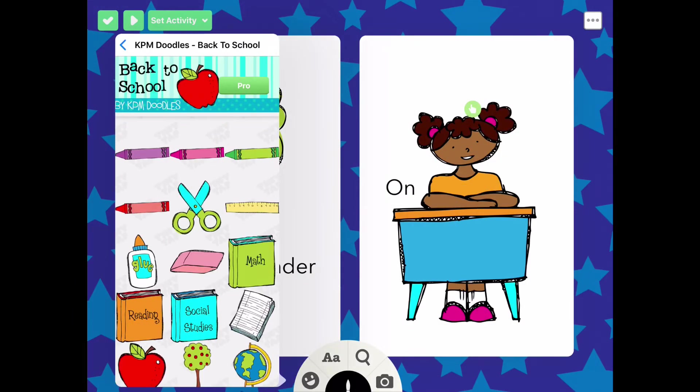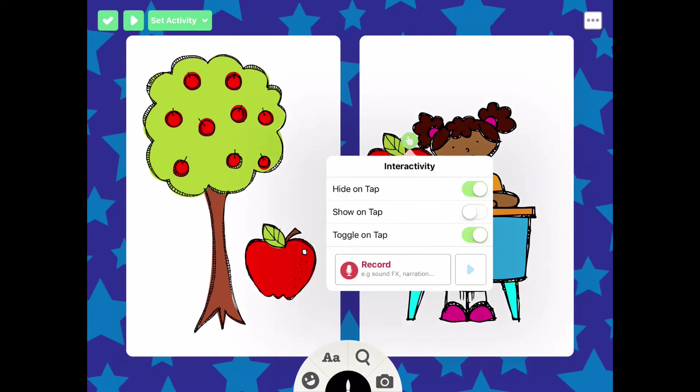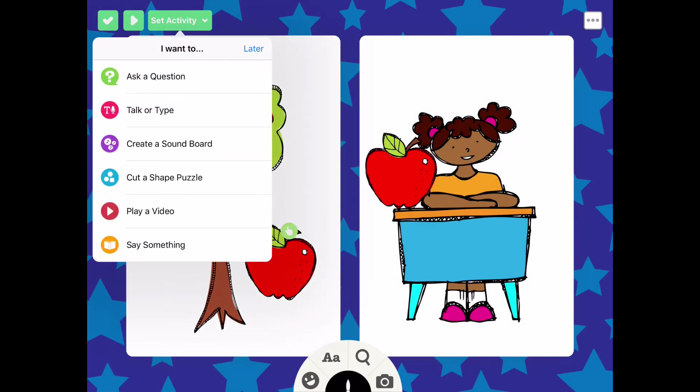We'll start with the design. I'm making a quick demo activity about prepositions. Once I'm ready to make it interactive, I'll just use the drop-down menu to select how.